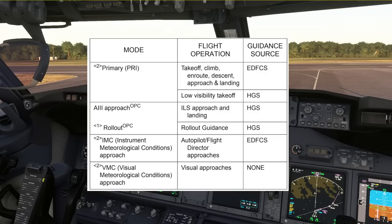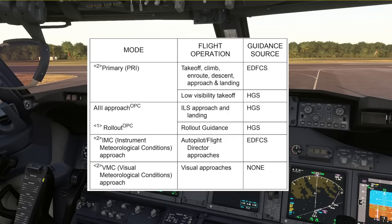The different modes available are: primary mode, used mostly during takeoff, climb, enroute, descent, approach, landing, and during low visibility takeoff. Then the HUD A3 approach mode, used during ILS approach and landing. The roll-out mode is used for roll-out guidance. There are also IMC and VMC modes — don't let the names fool you. IMC mode is used for any autopilot or flight director approach, showing raw data like ILS or VOR. VMC mode is only used for visual approaches, removing any raw navigation data from view.